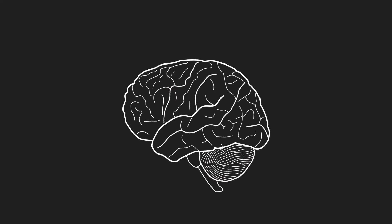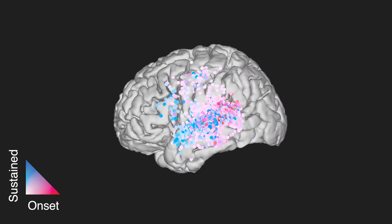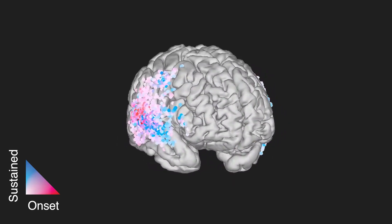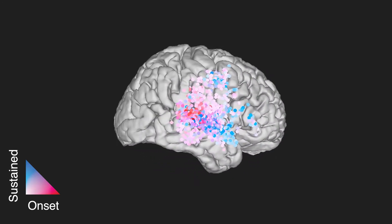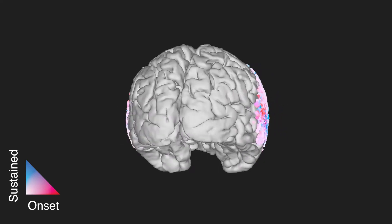We found that these two response types were spatially localized to separate brain areas, with the onset area at the back of the superior temporal gyrus, and the sustained area more toward the front. This spatial organization was seen across the vast majority of the 27 participants, both in the left and right hemispheres.